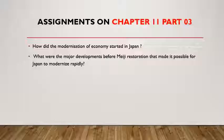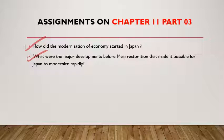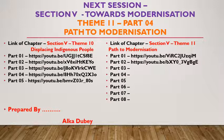The assignment to be completed in Theme 11 Part 3 is as follows: Number one — How did the modernization of the economy start in Japan? Number two — What were the major developments before the Meiji Restoration that made it possible for Japan to modernize rapidly? Go through the text properly, understand it, listen to the classes, and then write down the answers. In the next session — Section 5, Towards Modernization, Theme 11 Part 4 — we will continue.